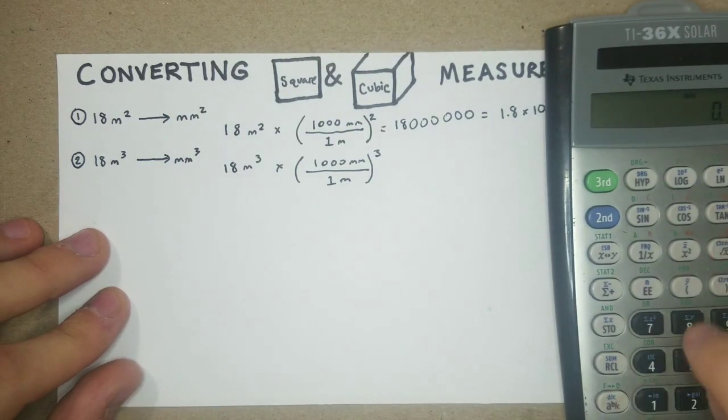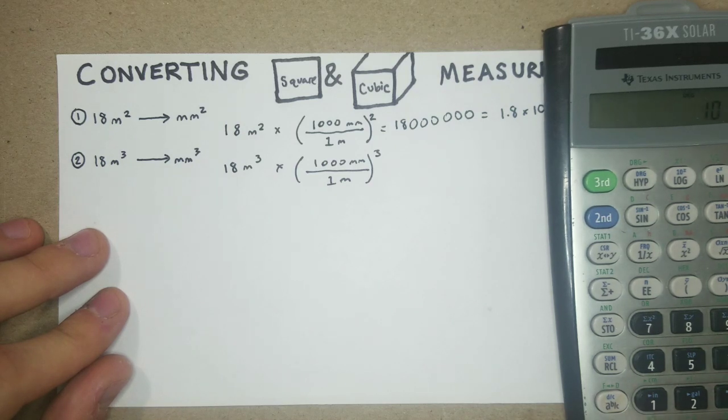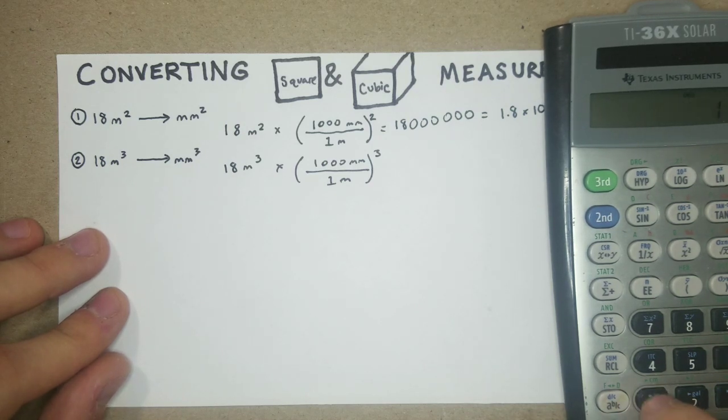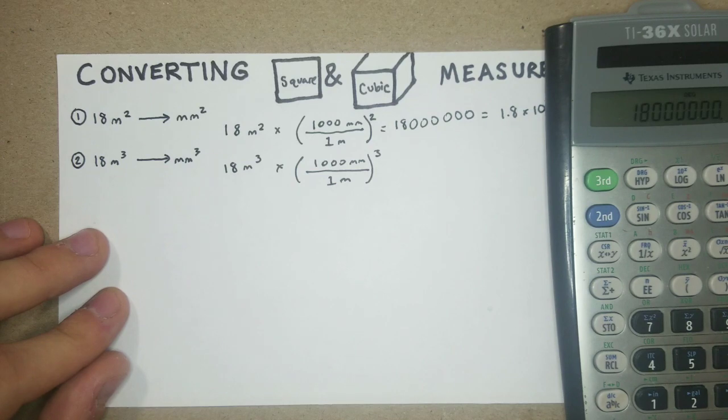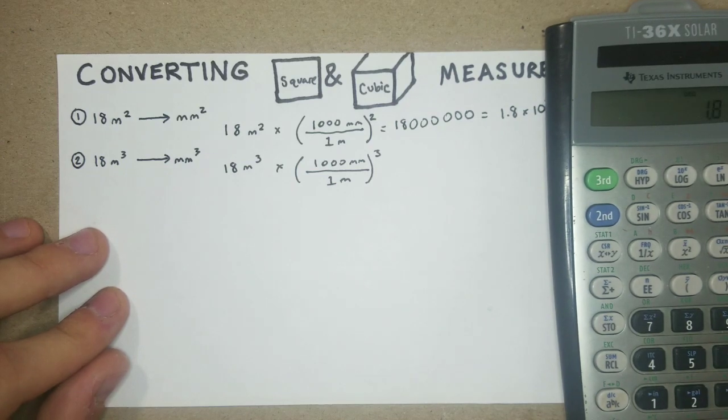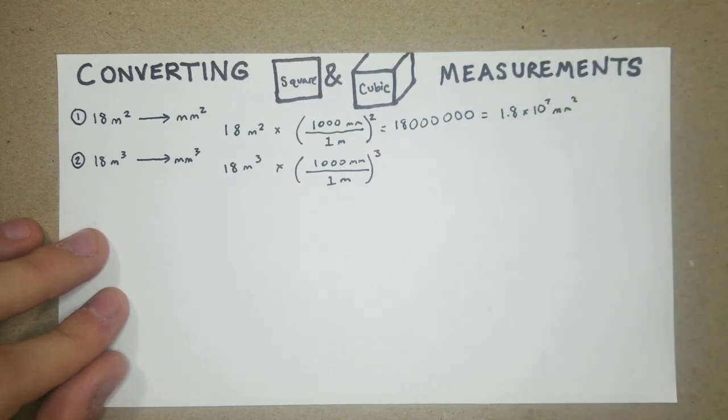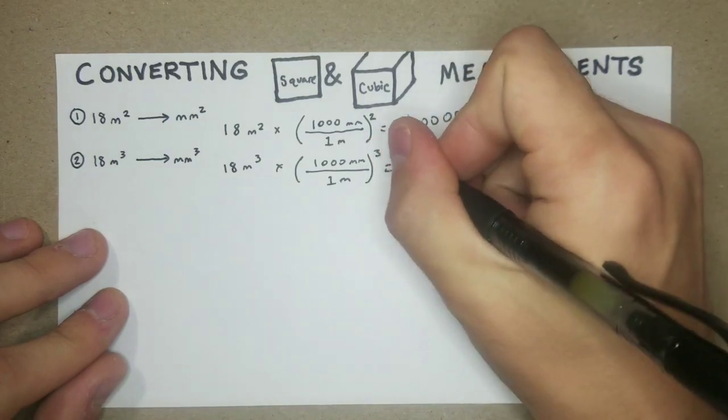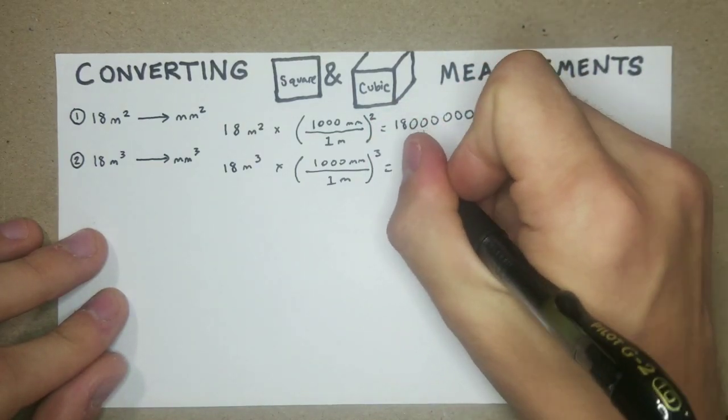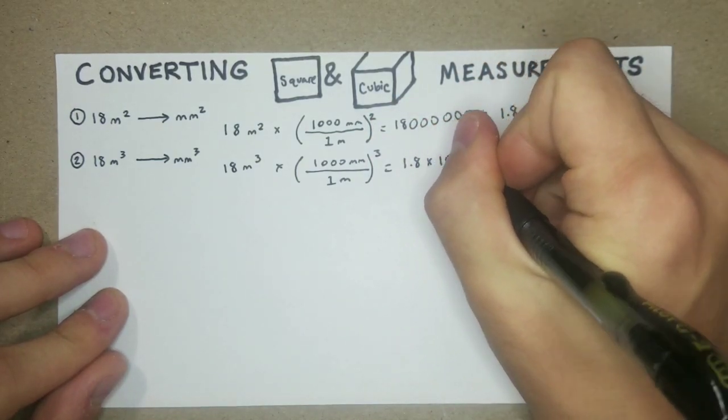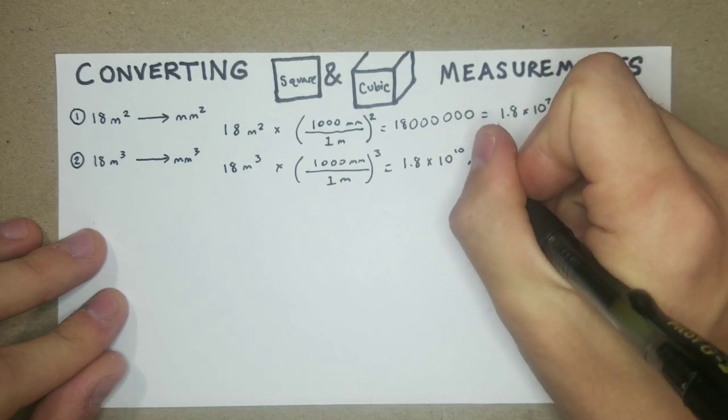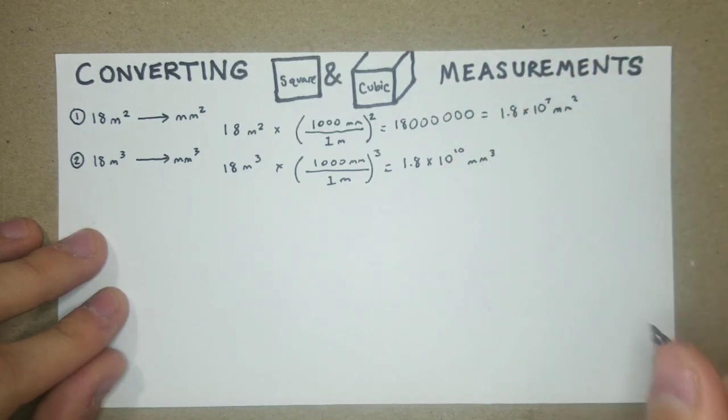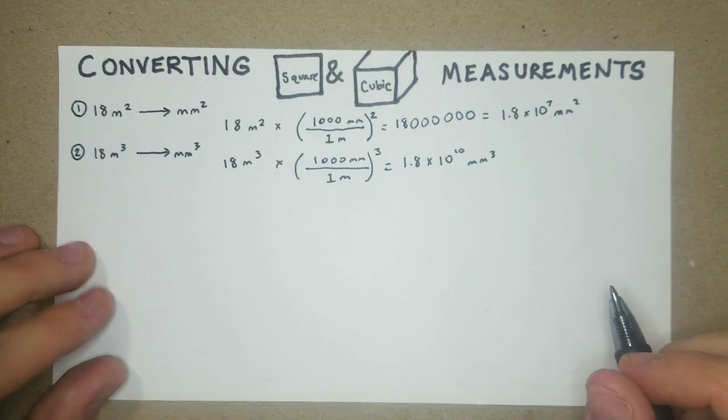Plug that in. 18 times 1,000 times 1,000 times 1,000. Seems tedious, but that's kind of just the way that I find make the fewest mistakes with. 1.8 times 10 to the 10 cubic millimeters. So not too bad.